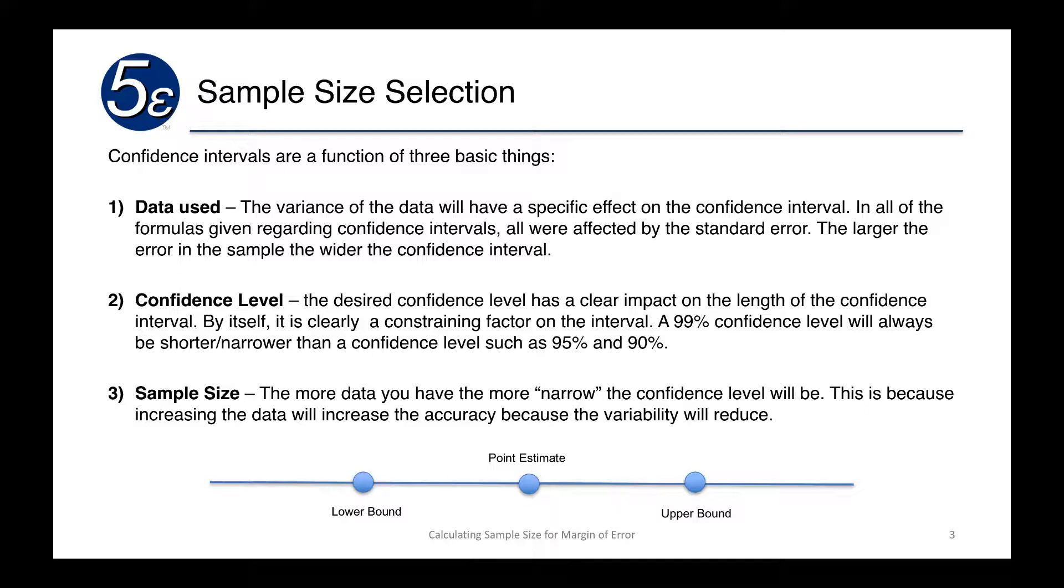And it's a function of three things. Number one is the data used. The variance of the data we have in our sample will affect the confidence interval. All of the formulas that we had shown with confidence interval are affected by standard error. If our error increases because of the sample, our confidence interval will be wider.